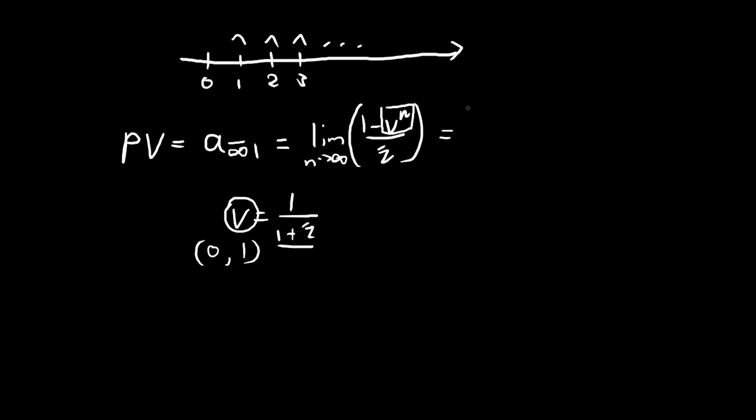So this term here, all we're left with is 1 minus 0 divided by i, so 1 over i. This is the present value of our perpetuity immediate.